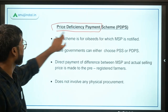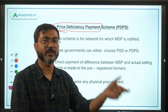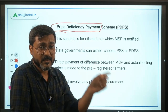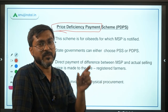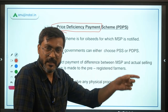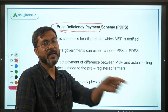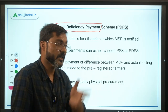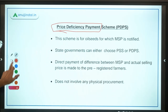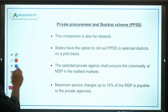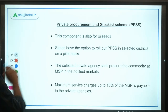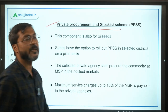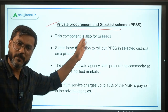To summarize PDPS: the government is providing the deficient price, which is the difference between the MSP and the actual selling price. Now moving to the third component, which is the Private Procurement and Stockist Scheme.